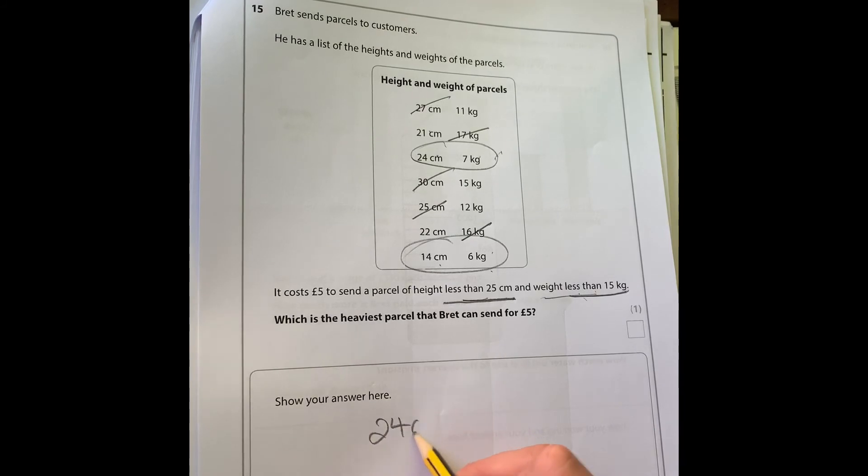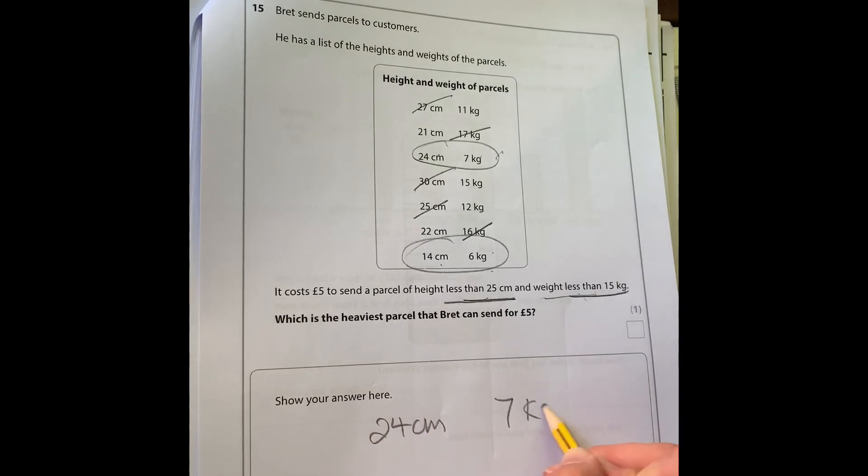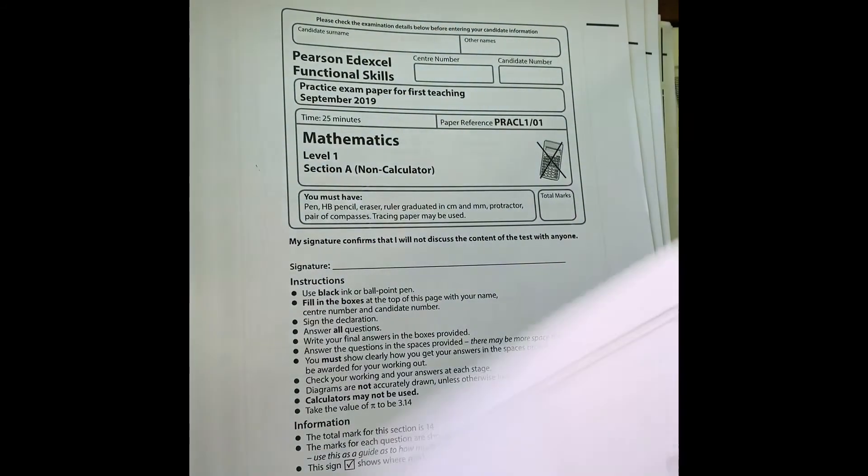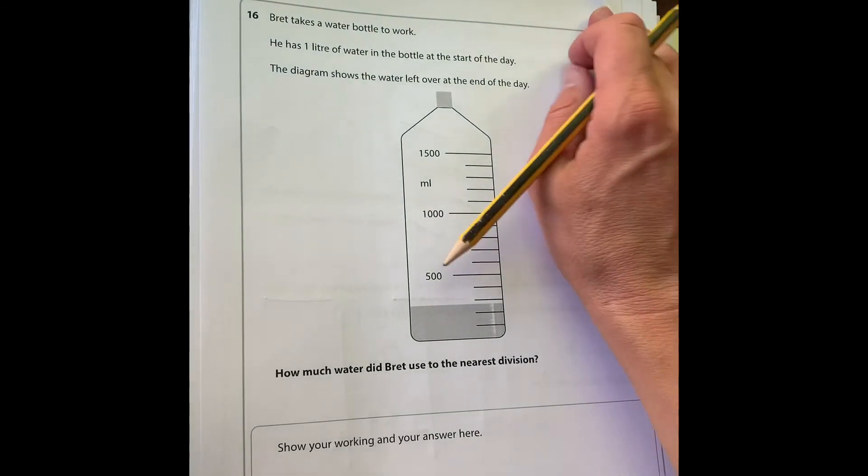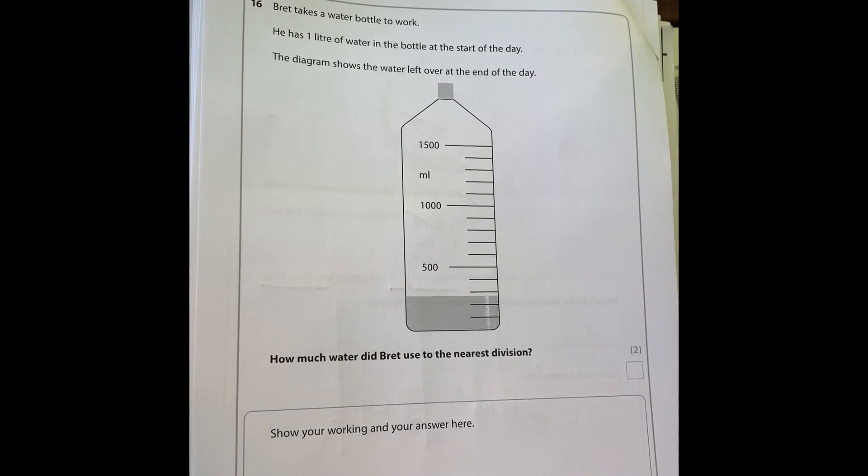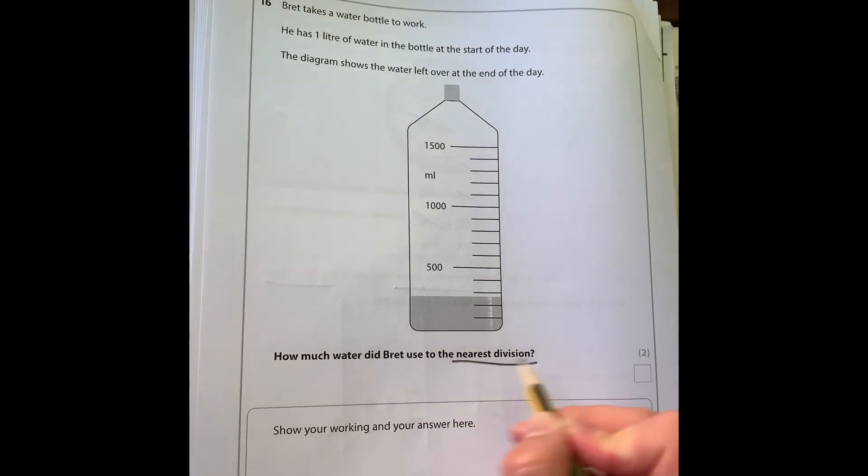Number 16: Brett takes a water bottle to work. He has one liter of water in the bottle at the start of the day, and this is what he has left over at the end of the day. How much water did Brett use to the nearest division? Here the key thing to notice is to the nearest division. If you're like me, I was tempted the first time to round this to 250, but because it says the nearest division, we'll do as they ask and work out that each of these divisions must be worth 100.